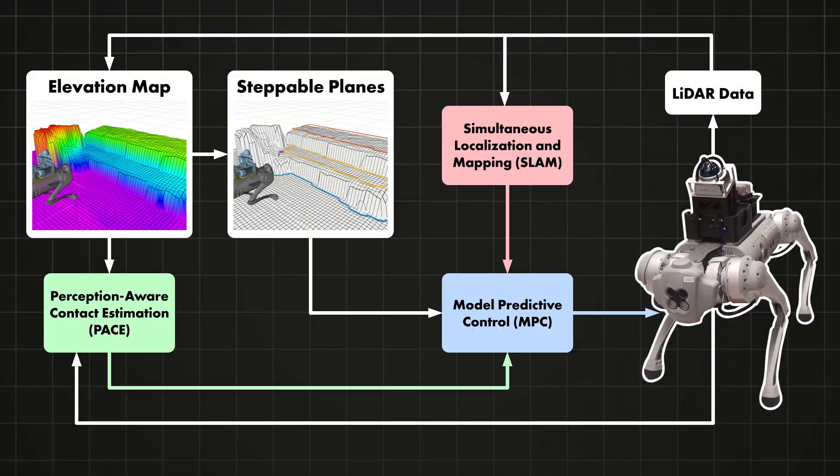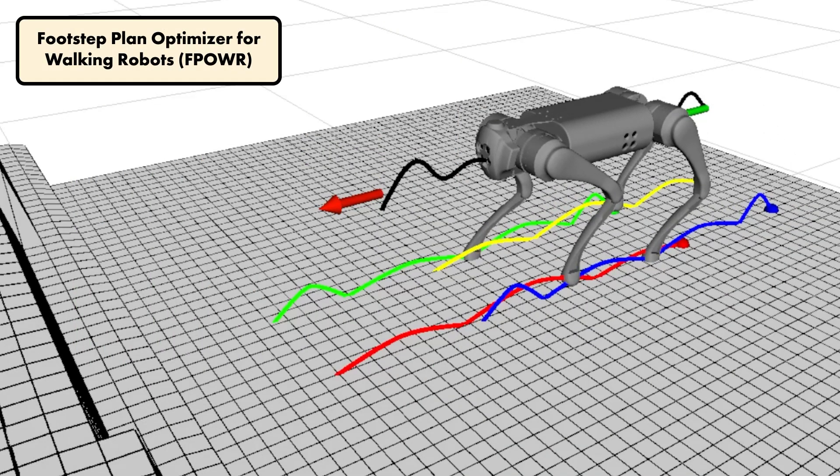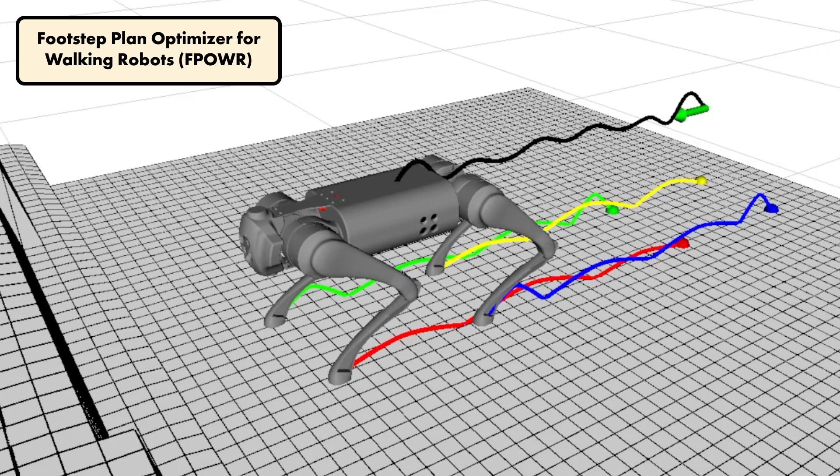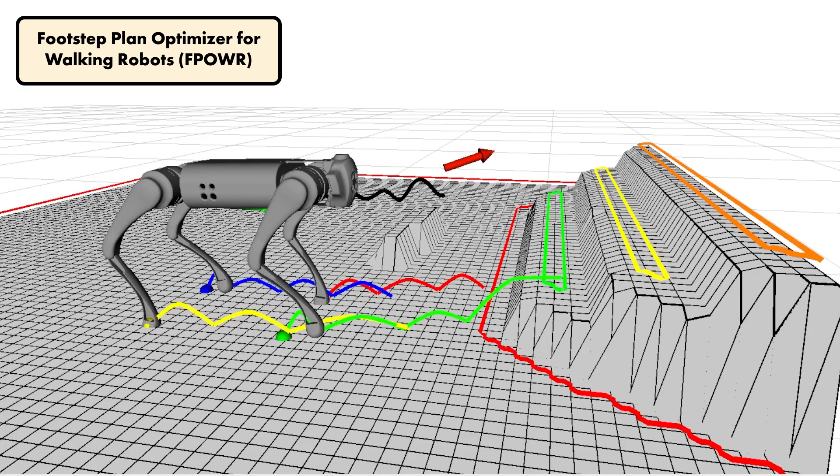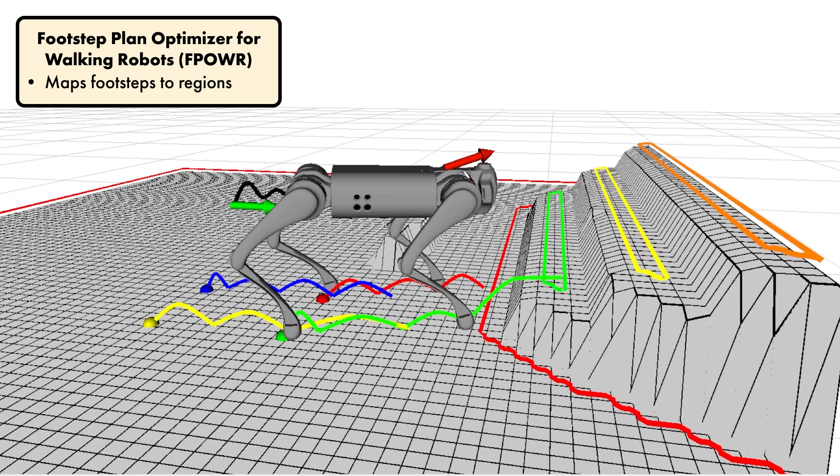Lastly, our team also developed a custom footstep planner designed to generate foot placements dynamically as new terrain data is received. Developed as a standalone library, this planner is designed to work with a variety of trajectory optimization frameworks. Footstep positions are extracted from a simplified trajectory optimization solver, and each one is mapped onto the nearest steppable region.